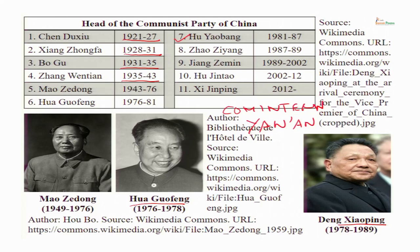Hu Yaobang was the General Secretary until 1987, when there was a protest and he was not willing to crack down on the protesters — he basically supported political reforms. The party elders, who were very wary of any kind of political instability in China because they wanted to focus on economic development, removed him. Instead, another protégé of Deng Xiaoping, Zhao Ziyang, was appointed in 1987.